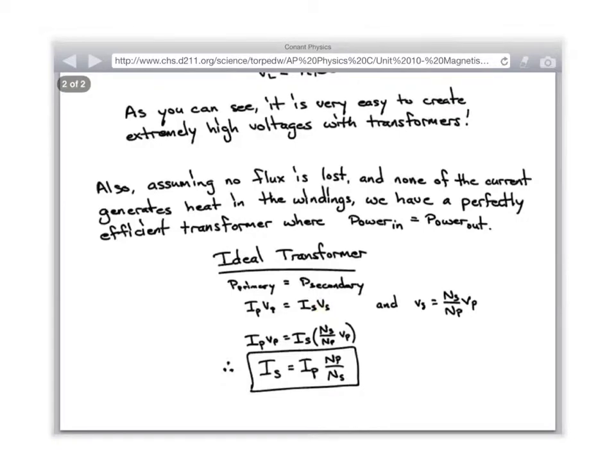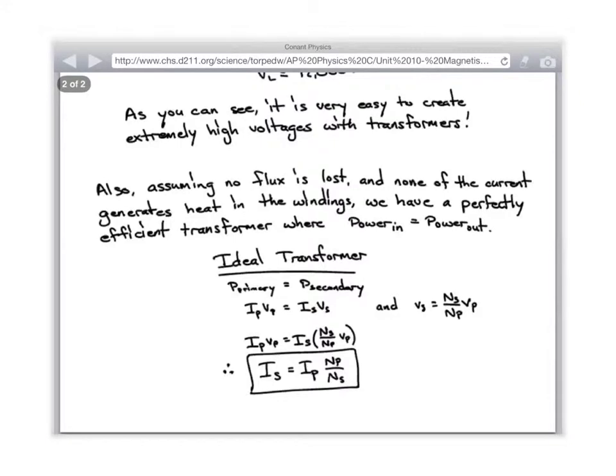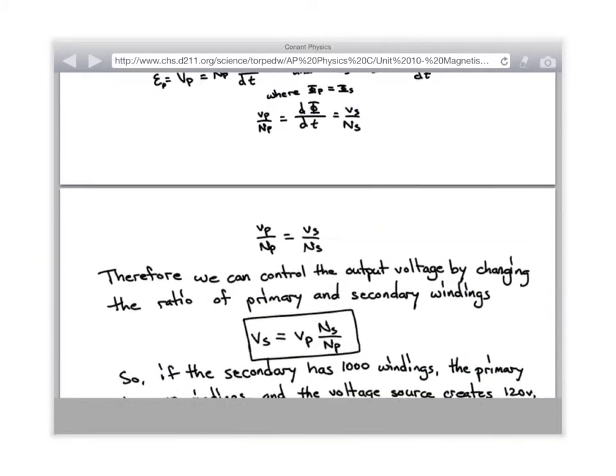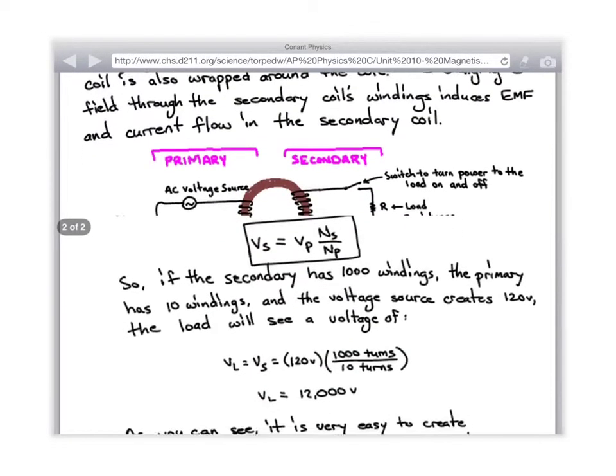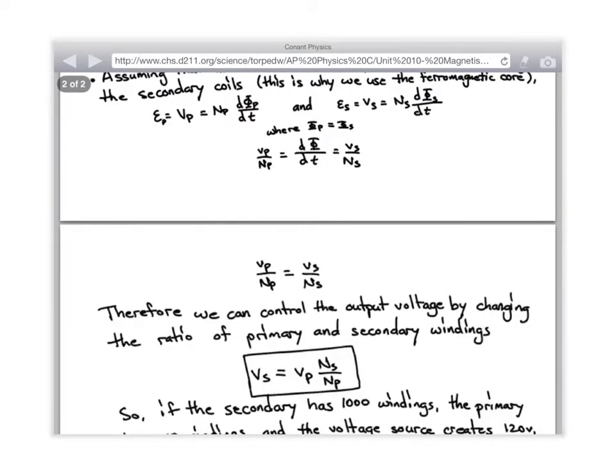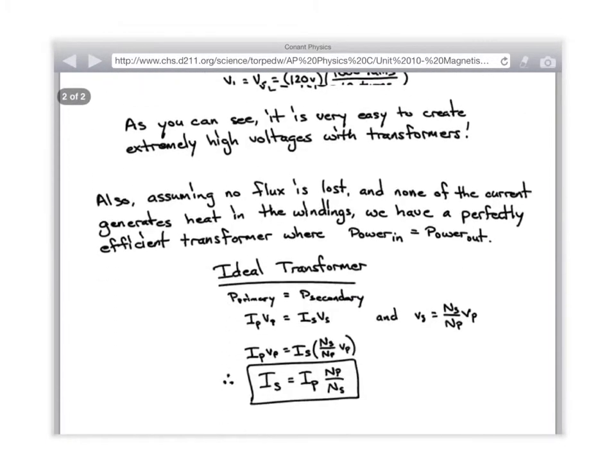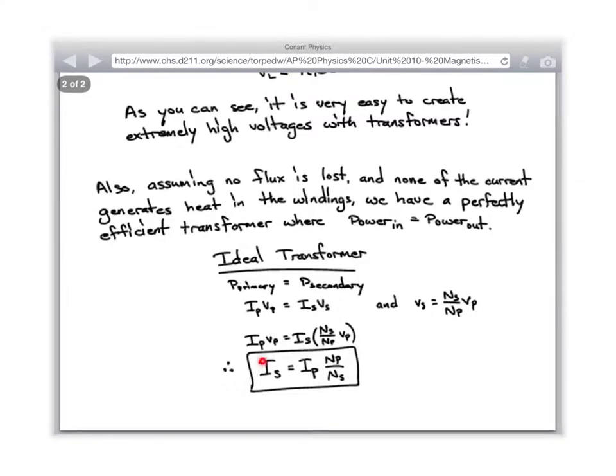And we also know that the voltage induced in the secondary is equal to the ratio of the number of coils on the secondary, the secondary windings, to the number of coils on the primary, the primary windings. So therefore... and you can go through this derivation on your own. You end up with the current through the secondary equals the current through the primary times the number of primary coils divided by the number of secondary coils.